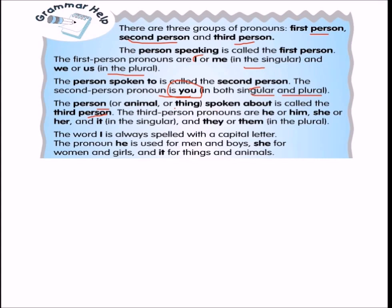Third person refers to the person, animal, or thing being spoken about. The third person pronouns are: he/him, she/her, it — in singular; and they/them — in plural. We use 'he' for men and boys, 'she' for women and girls, and 'it' for things and animals. Animals can also be masculine or feminine; for general use, 'it' is used. The word 'I' is always spelled with a capital letter.